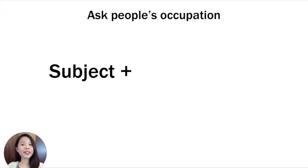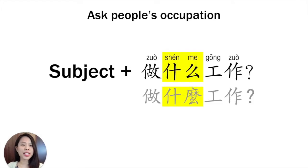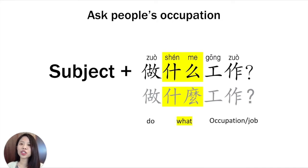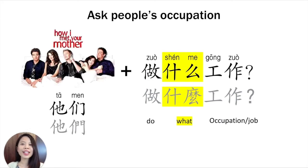We can use this structure to ask people's occupation. Subject plus 做什么工作 — 做 means 'do,' 什么 means 'what,' 工作 means 'job' or 'occupation.' So it means 'What do you do for a living?' You can say 你做什么工作. Now I'm going to use this show to help everyone learn occupations.